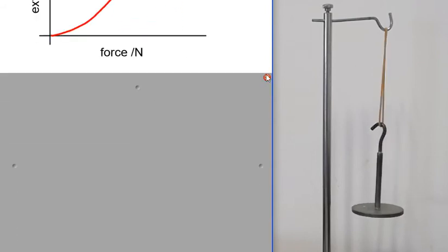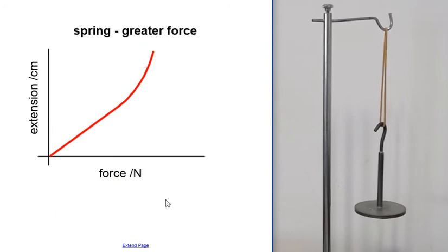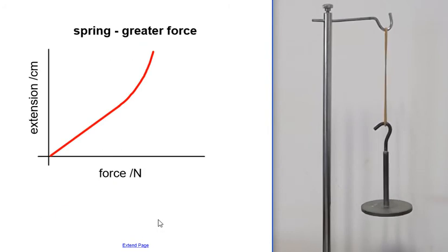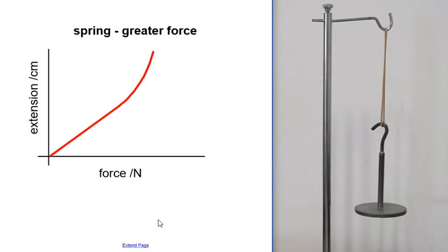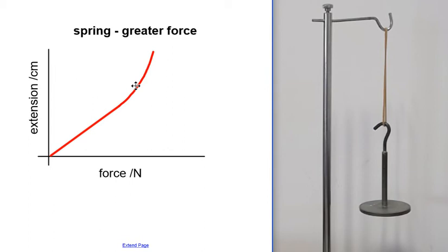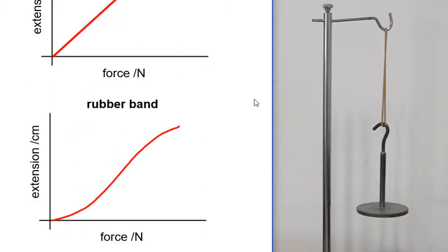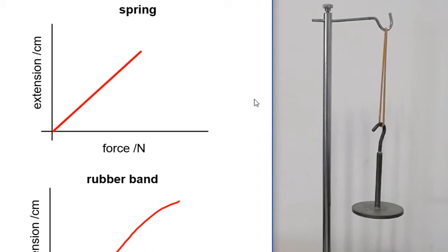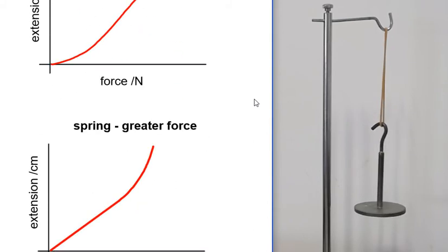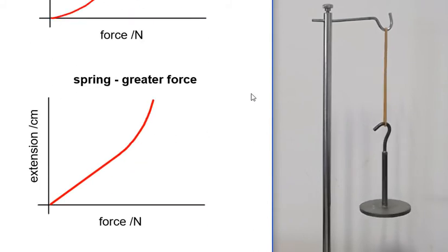If you keep going with the spring — clamping your stand down carefully and doing this over the side of the table — you might get a graph that is a straight line through the origin for a while, and then the line starts to curve. These are different results you can get from doing this experiment.